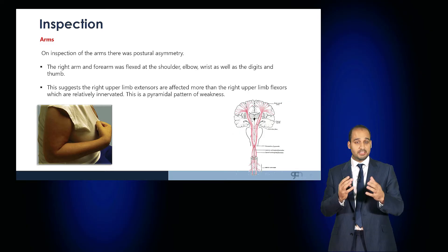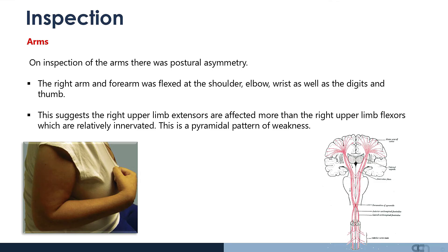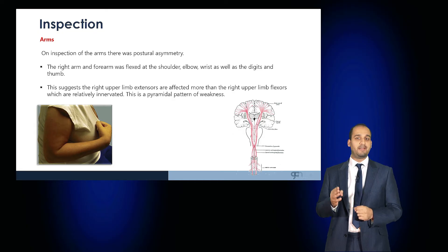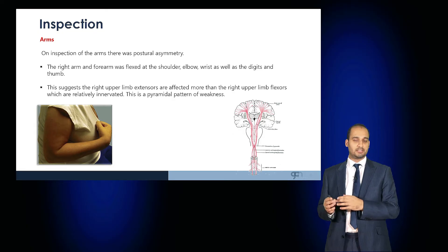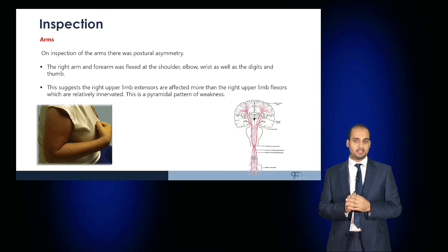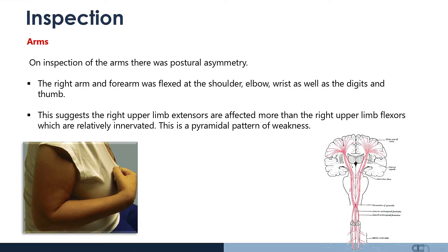On inspection of this patient, you can see that the right arm and forearm are flexed — the shoulder, elbow, digits and thumbs are all flexed. This is because the extensors of the right upper limb are affected more than the flexors. The flexors are relatively preserved, which is why the patient assumes a flexed position in the upper limbs — classical of a pyramidal pattern of weakness.